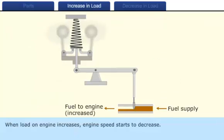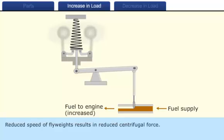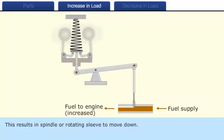When load on engine increases, engine speed starts to decrease. The rotational speed of the ball arms also decreases. Reduced speed of flyweights results in reduced centrifugal force. The speeder spring force exceeds the centrifugal force causing flyweights to rotate close to the axis of rotation. This results in spindle or rotating sleeve to move down.